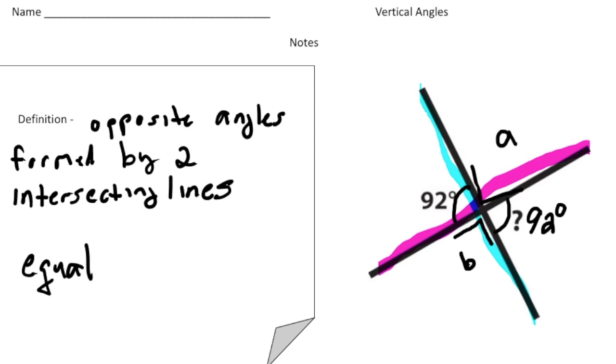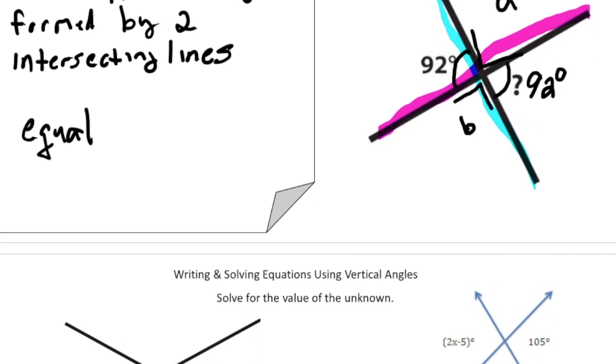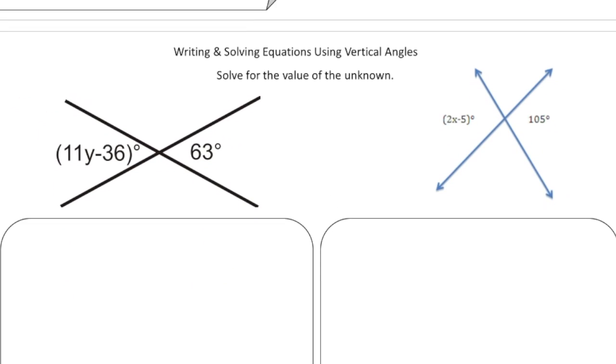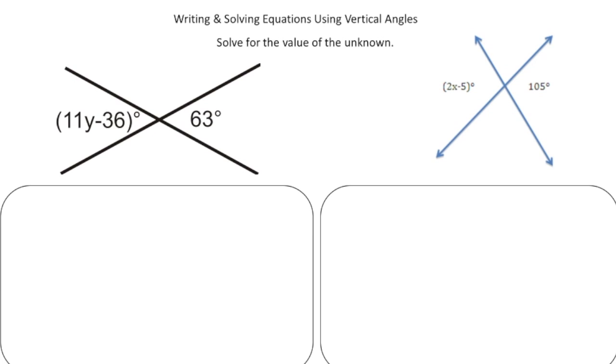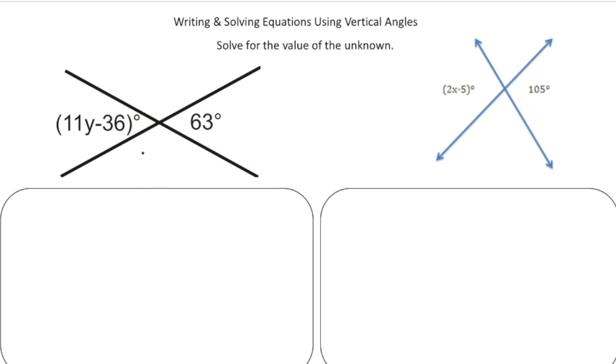All right. Now that you know this, why don't you scroll down to the next page. And let's try to solve some equations involving vertical angles. So here we have two angles. One is 11Y minus 36. And if you notice, the other side is 63. So based on what we understand about vertical angles, we need to write an equation to solve for Y. So because of this, we know that this angle here is the same as this angle here. So the equation is going to be 11Y minus 36. It's going to equal 63.